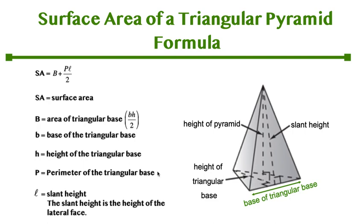We have capital P which is the perimeter of the triangular base. So let's recall that perimeter means to add up all three sides of a triangle, and L is slant height. So in this picture here, this dotted line right here represents your slant height.